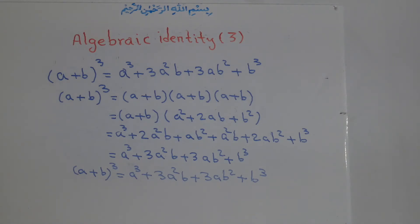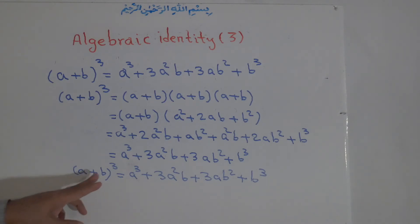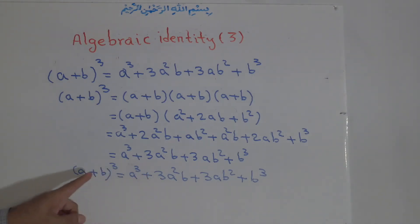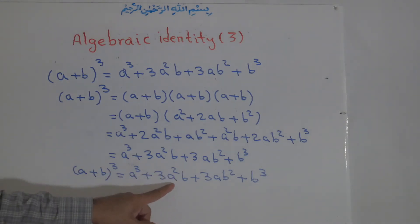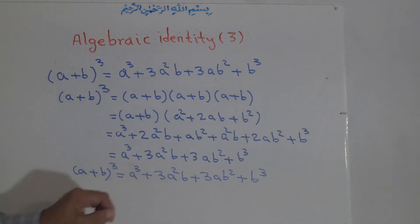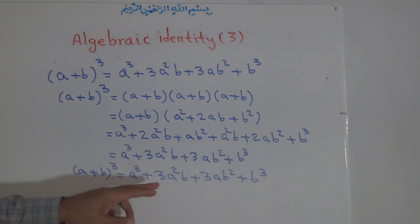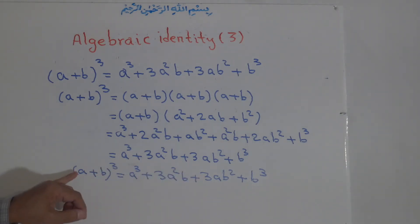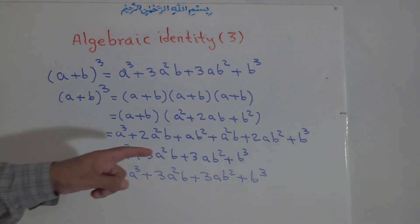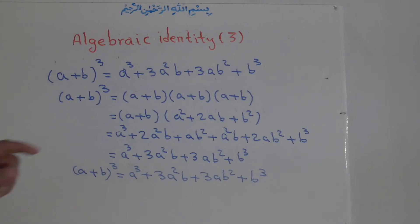Instead of expanding and risking mistakes, here is what you do: take the first term to the power of 3, then 3 times the square of the first term times the second term, then 3 times the first term times the square of the second term, and finally the cube of the last term.